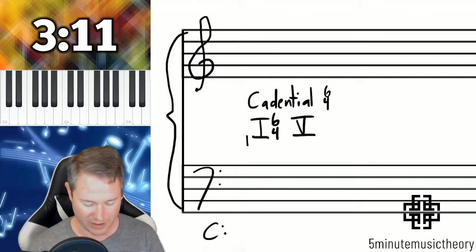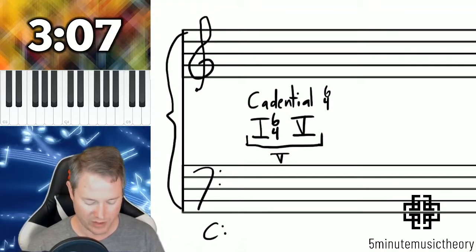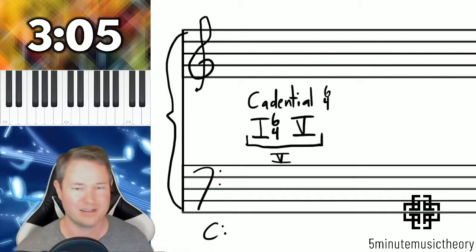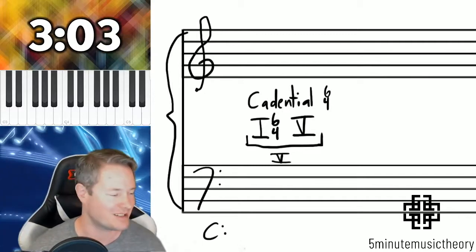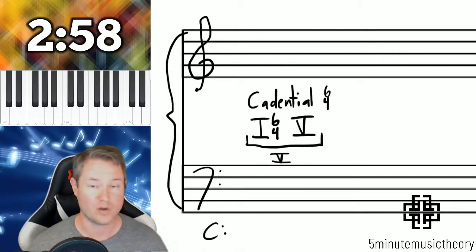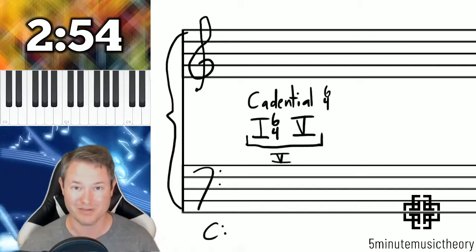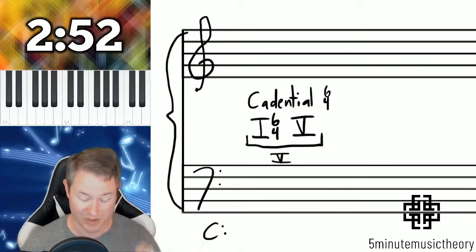So some people, and by people I mean music theory students and professors, will use this system of labeling which is a nice little compromise because what this is saying is that it's a tonic chord that's in second inversion that then goes to a root position dominant but both of them perform dominant functions. That's why the dominant is there with the bracket.